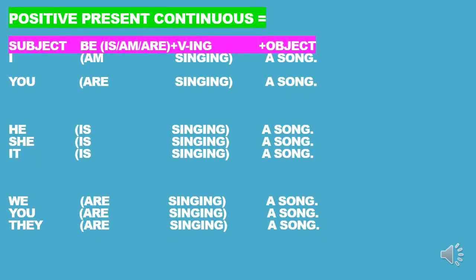Slide 2, the Present Continuous Positive. The formula is: subject + verb to be (am/is/are) + verb-ING + object. For the subject 'I', the verb to be should be 'am' plus verb-ING. So 'sing' becomes 'singing', and the object is 'a song'.